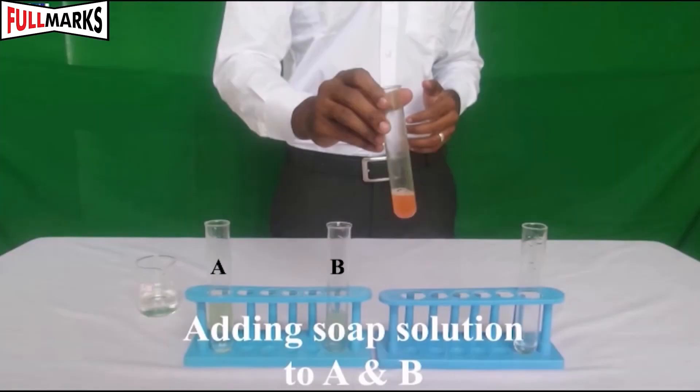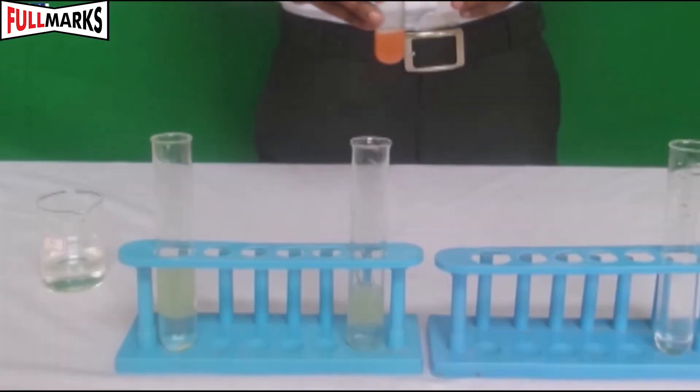Label it as B. In both test tubes, add a few drops of soap solution.